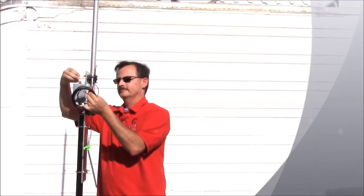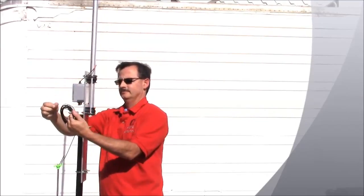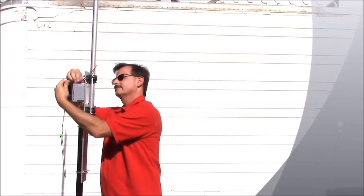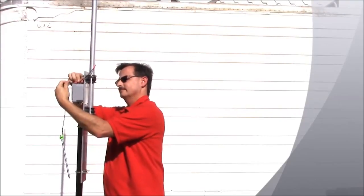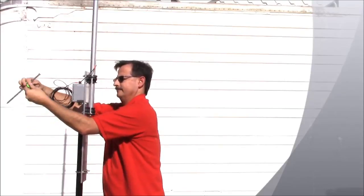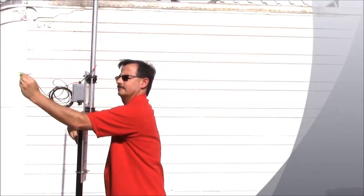There is a short jumper wire that attaches the vertical base element which has a 3/8 ring connector that is slid over the stainless steel bolt on top of the alpha match after the stainless steel nut is removed. There is also a 3/8 ring connector on the NVIS element that slides over the same bolt.